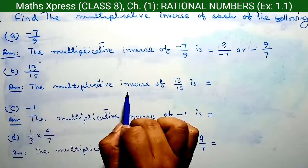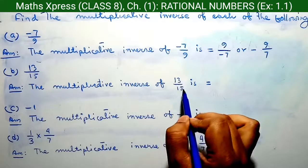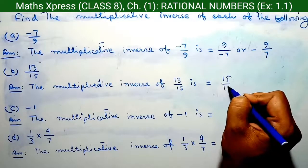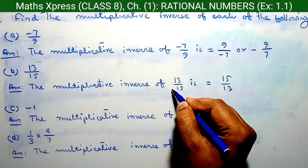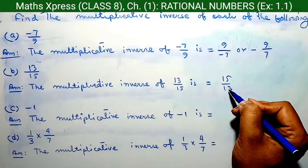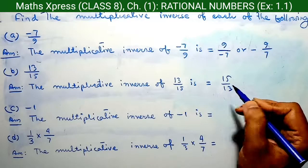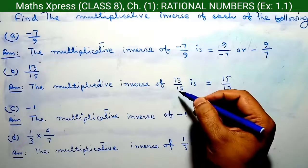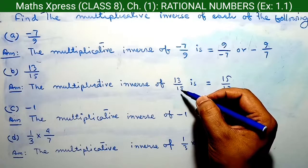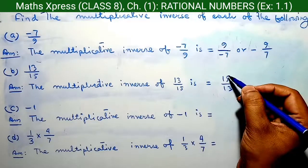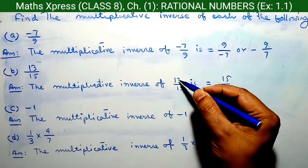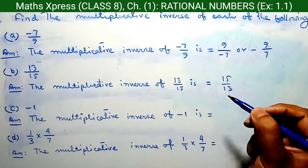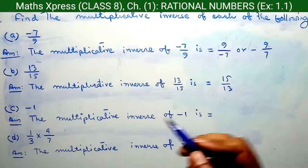Question B: 13 by 15. The multiplicative inverse of 13 by 15 is 15 by 13. Since this is positive, the inverse is also positive. Here we write 15 as the numerator and 13 as the denominator. This is known as the multiplicative inverse.